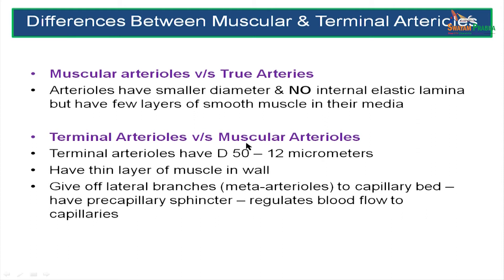Arterioles have a smaller diameter, no internal elastic lamina, and only a few layers of smooth muscle in their media — one to two layers. Terminal arterioles are smaller than muscular arterioles. They have a thinner layer of smooth muscle in their wall and give off branches called metarterioles which enter the capillary bed. They have precapillary sphincters which regulate blood flow into the capillary plexus.